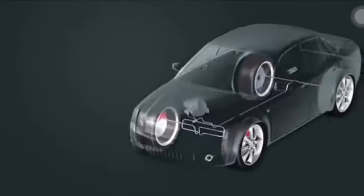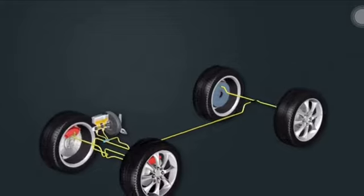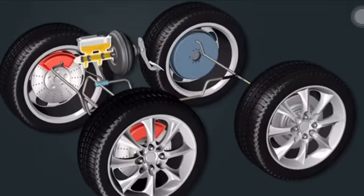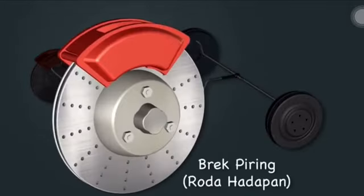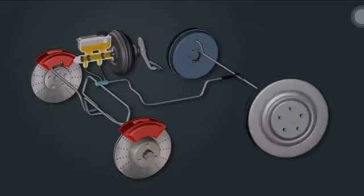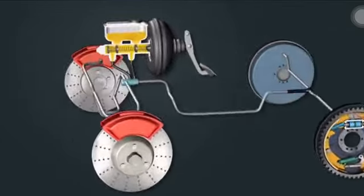Fungsi Sistem Brake Hydraulic Pada Kenderaan. Dalam brake hydraulic, tekanan dipindah melalui cecair daripada pedal brake ke roda-roda kereta apabila pedal brake ditekan. Terdapat dua jenis brake dalam kereta iaitu brake piring pada roda hadapan dan brake drum pada roda belakang.